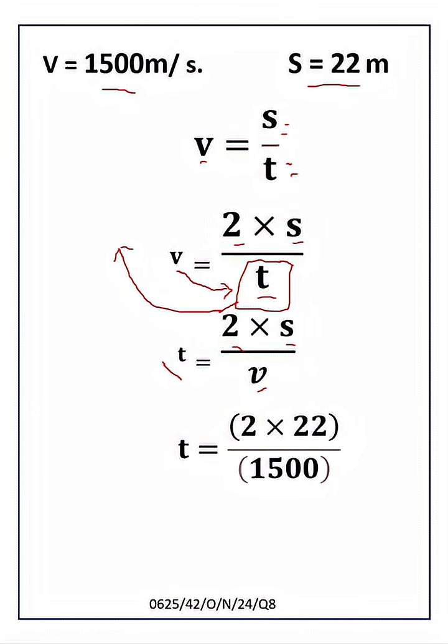Substituting the values: t = 2 × 22 divided by 1500. The final answer is 0.029 seconds. That is the time taken.